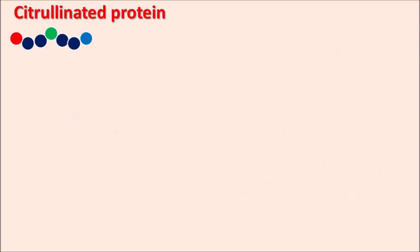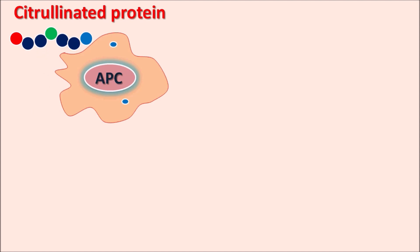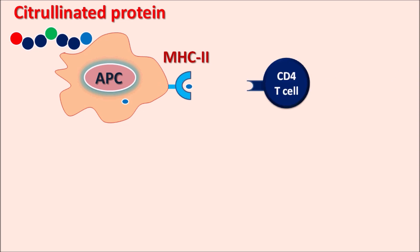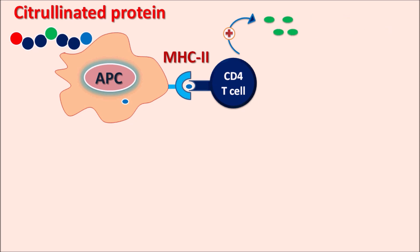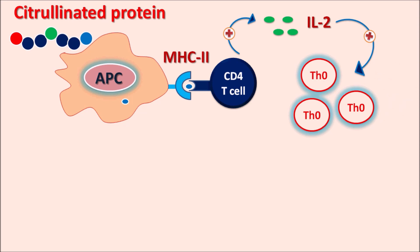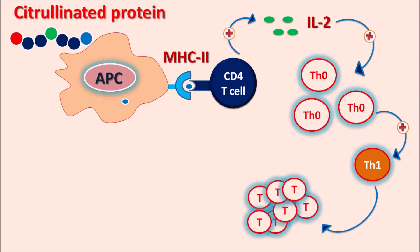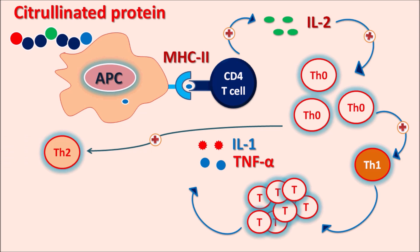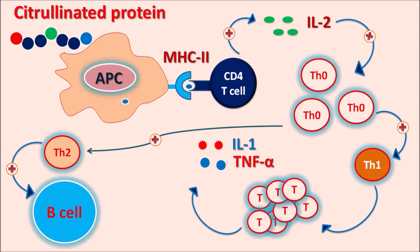The citrullinated protein acts as an antigen and interacts with antigen-presenting cells, which produce a fragment expressed on MHC2 molecules. This fragment along with the MHC2 complex interacts with CD4 T cells. When CD4 T cells are activated, they release the mediator IL-2, which acts on Th0 lymphocytes. Th0 lymphocytes then interact with Th1 lymphocytes, stimulating T cell proliferation. These activated T cells release inflammatory mediators including IL-1 and TNF-alpha, producing inflammation. Th0 lymphocytes can also activate Th2 cells, promoting B cell activation and autoantibody release, further worsening rheumatoid arthritis.